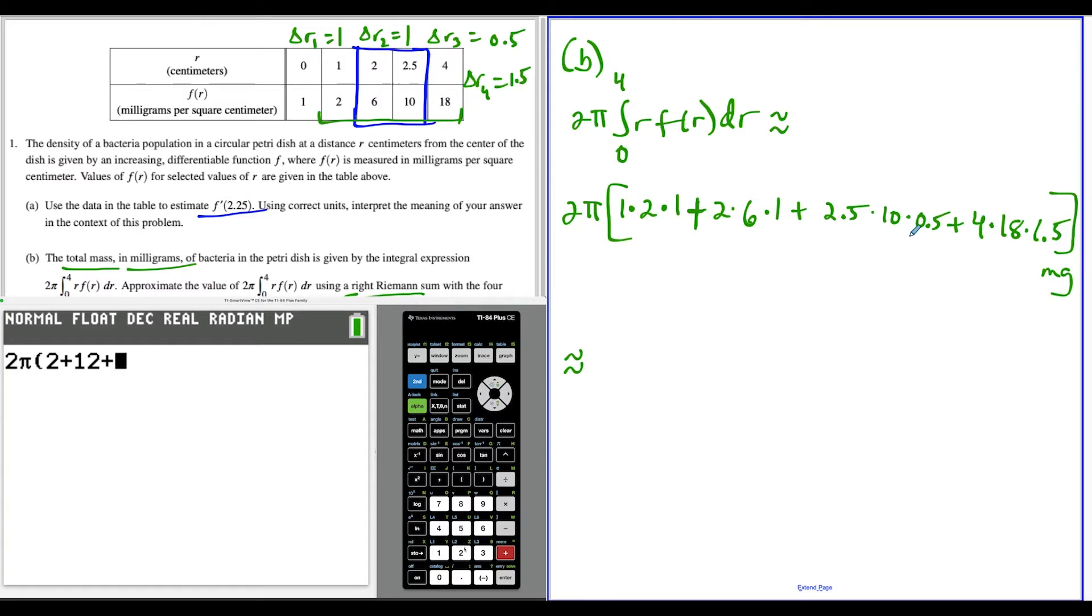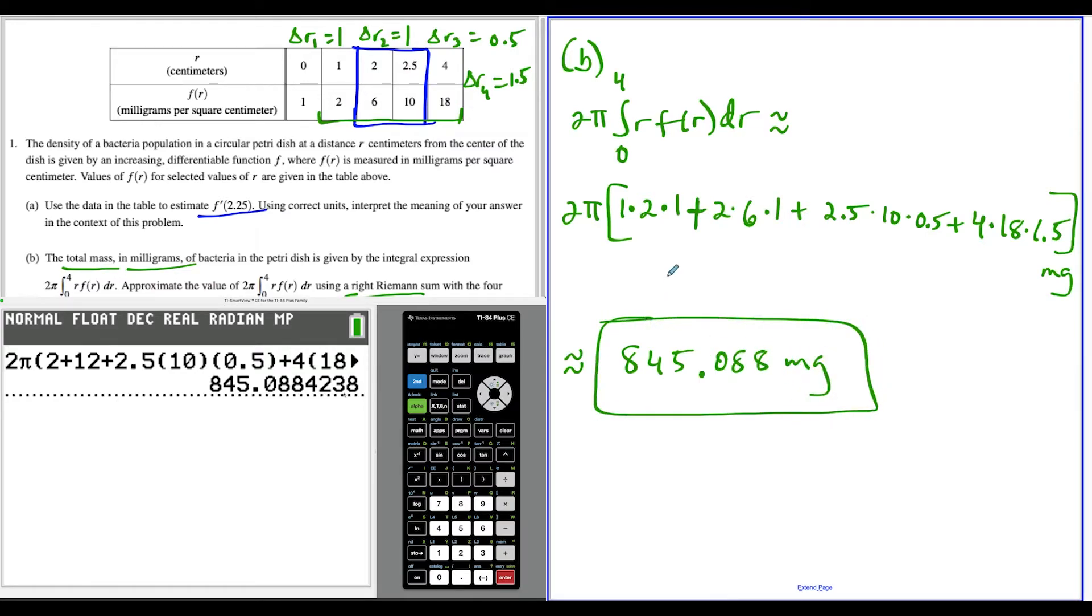Plus we have 2.5—now look, you could do all the mental math you want, but if you have a calculator, there's no shame in just typing this in. Then we have plus 4 times 18 times 1.5. This is our approximation for the mass in the Petri dish. The final answer is 845.088 milligrams. Remember, always round to three decimal places.